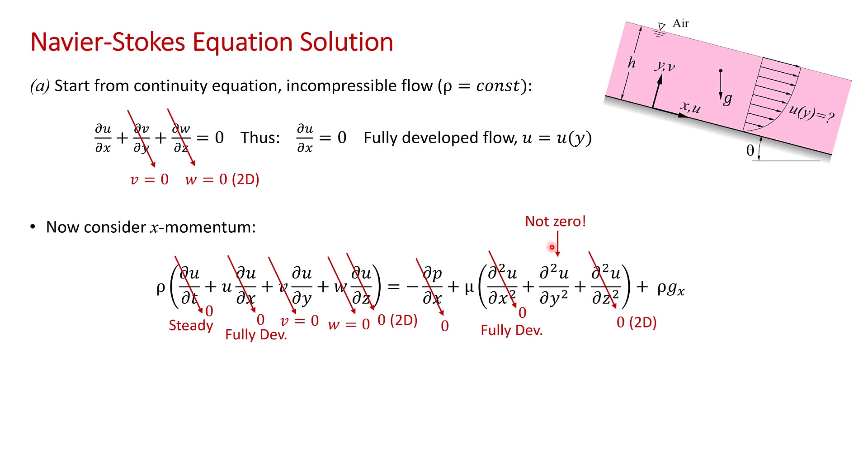However, we have to retain this term ∂²u/∂y². And of course, we have it's a gravity-driven flow, so we have ρgx. As I mentioned on the previous slide, the x component of the gravity vector is g sin theta. So now we can simplify this equation, retaining this term and making the substitution that gx = g sin theta.